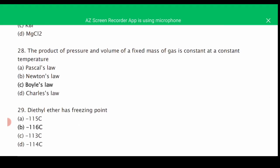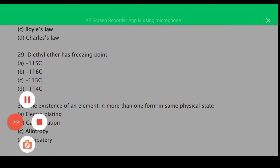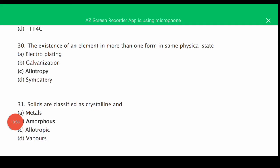MCQ number twenty-eight: the product of pressure and volume of a fixed mass of gas is constant at constant temperature — this is the statement of Boyle's law, the correct answer is C. MCQ number twenty-nine: diethyl ether has a boiling point — the correct answer is B, minus 160 degrees centigrade. MCQ number thirty: the existence of an element in more than one form in the same physical state is called allotropy.